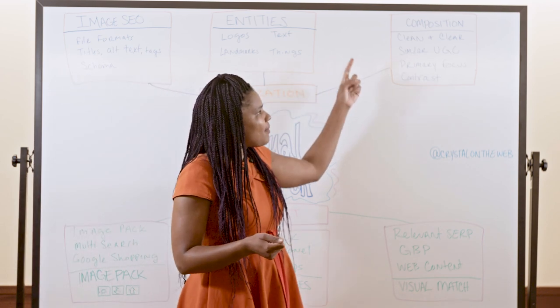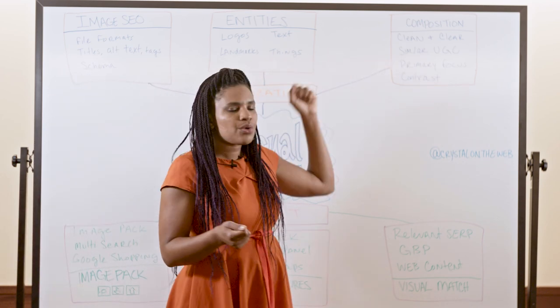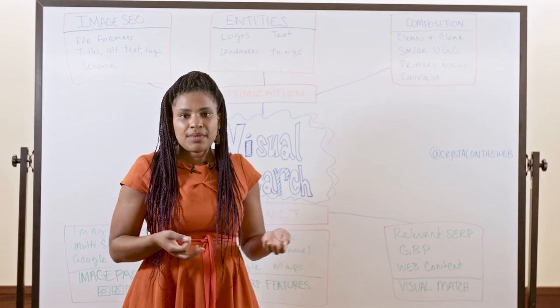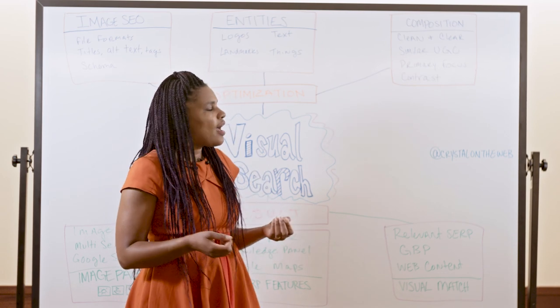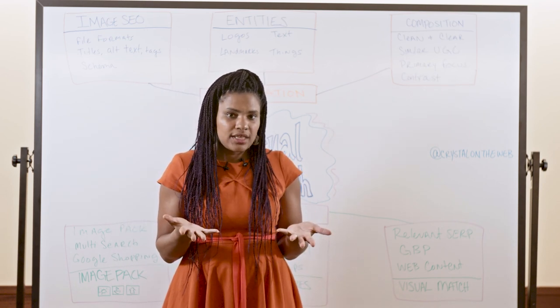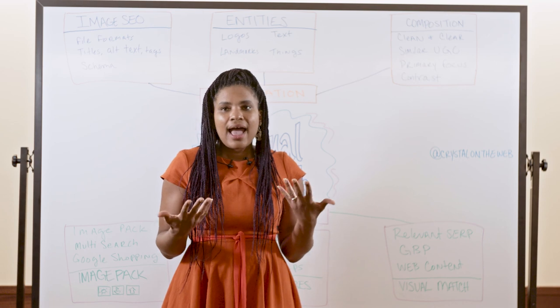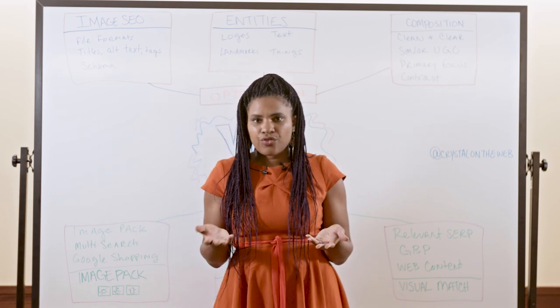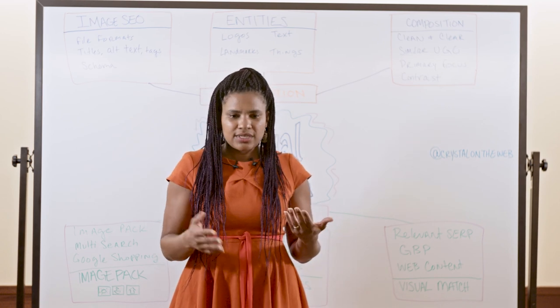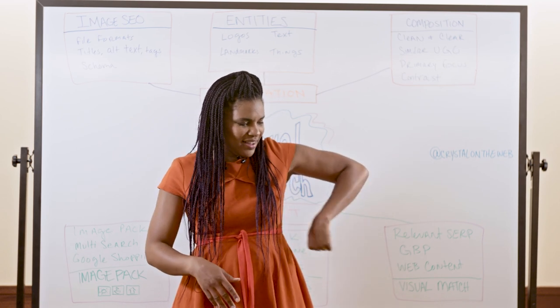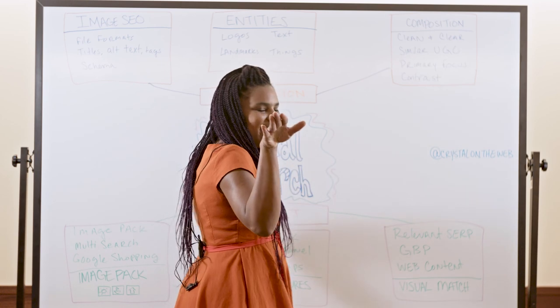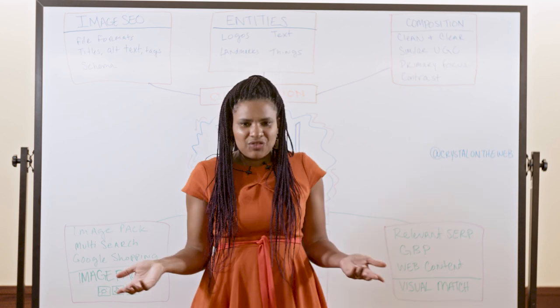And then the other one you want to think about is your composition. So the composition that you have for your image will affect what Google understands the image to be about. So for instance, the way that the different elements are positioned within an image can affect how Google understands the image. So I did an article for Moz at the beginning of the year where I compared a teapot. And there was a teapot where the handle was here and the spout was here, and they understood that to be a teapot. And then when they turned it this way, they understood it to be a kettle. And those are two different things.